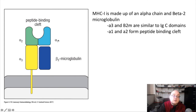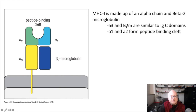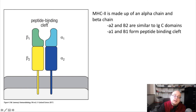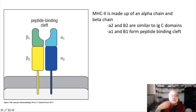The antigen interacts with alpha 1 and alpha 2, whereas alpha 3 and beta-2 microglobulin are structurally analogous to the constant regions of an immunoglobulin molecule. MHC class 2 is a bit different—it does not have beta-2 microglobulin. Instead, it has two of its own chains: an alpha chain and a beta chain. Alpha 1 and beta 1 make up the peptide binding cleft of MHC class 2, whereas alpha 2 and beta 2 are analogous to the constant regions of an immunoglobulin molecule.